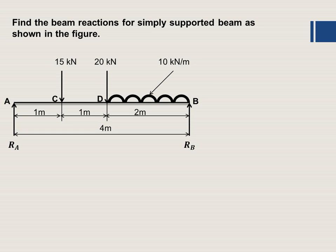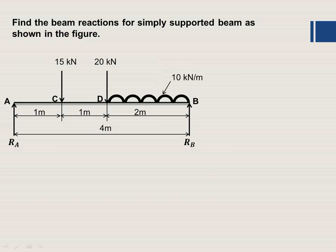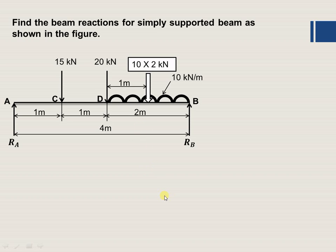The figure shows the simply supported beam carrying point loads of 15 kN and 20 kN, and a uniformly distributed load of 10 kN per meter. The UDL acts over 2 meters, so its total equivalent load is 10 multiplied by 2 = 20 kN, acting at the center of the 2-meter length, that is 1 meter from its start.